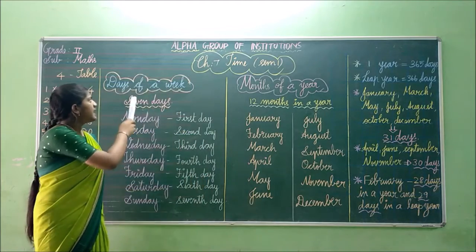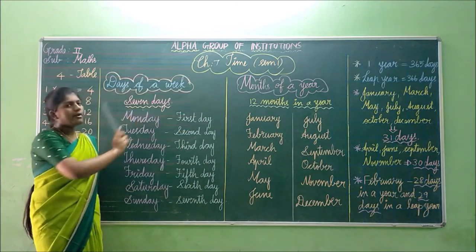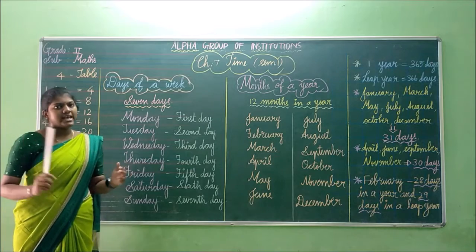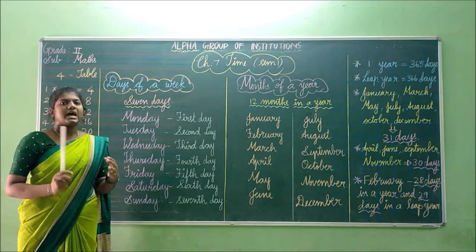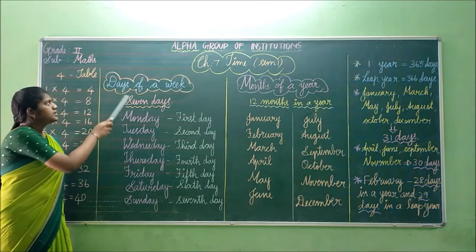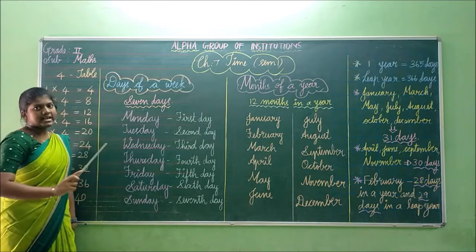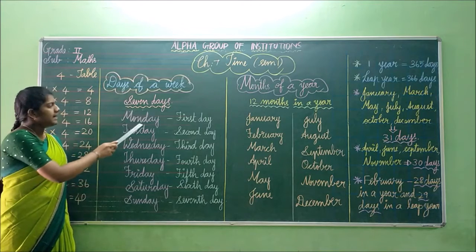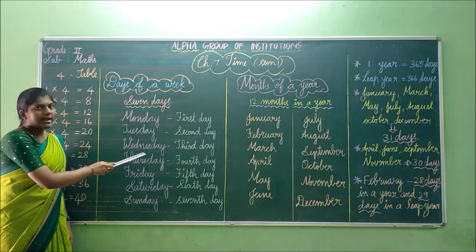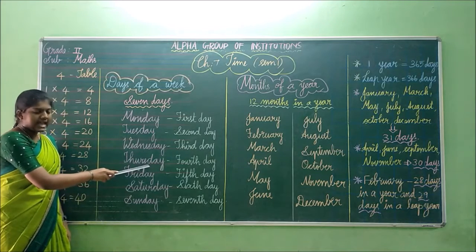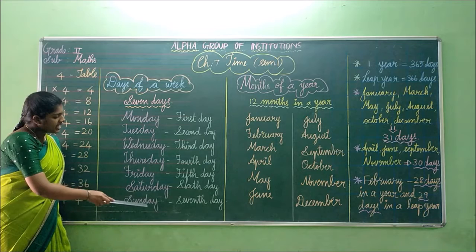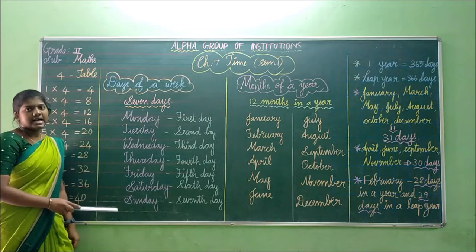First, let's look at days of a week. So in a week, how many days are there? Yes, there are 7 days. They are Monday, Tuesday, Wednesday, Thursday, Friday, Saturday and Sunday.